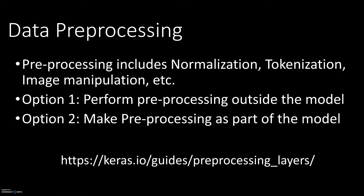A second example: let's say we have text data. We all know that our machine learning models don't understand text, so we have to represent that text as numbers for our models to understand. That's a second example where we might have to do some sort of pre-processing. The types of pre-processing we've discussed are normalization and tokenization.